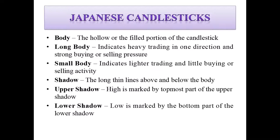Above and below the body is the shadow. The upper shadow is the topmost part — the upper shadow is the high. The lower shadow is the low, marked by the bottom part of the lower shadow.